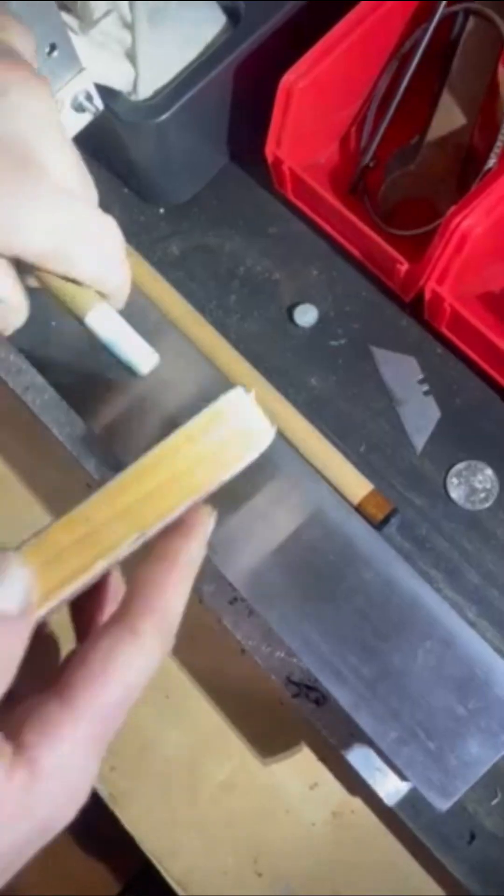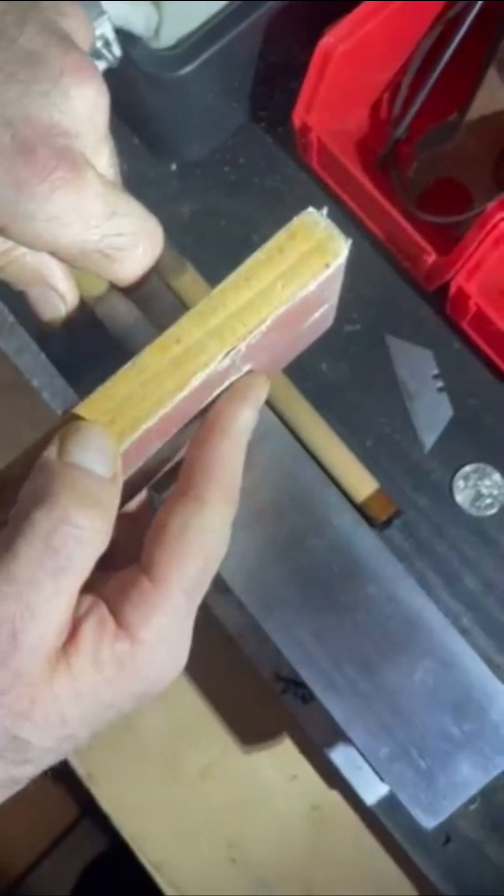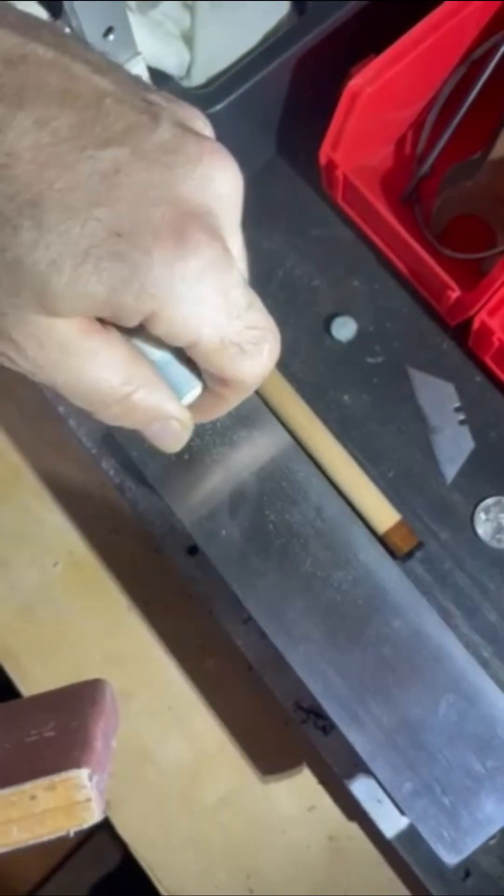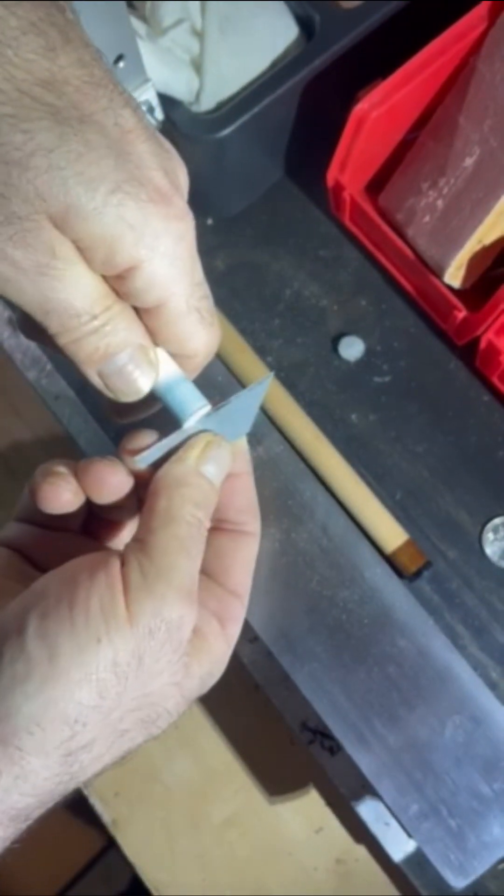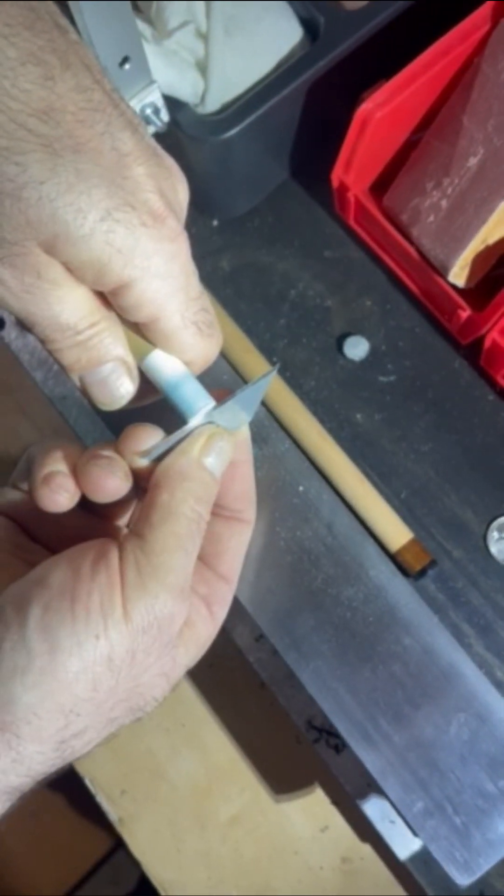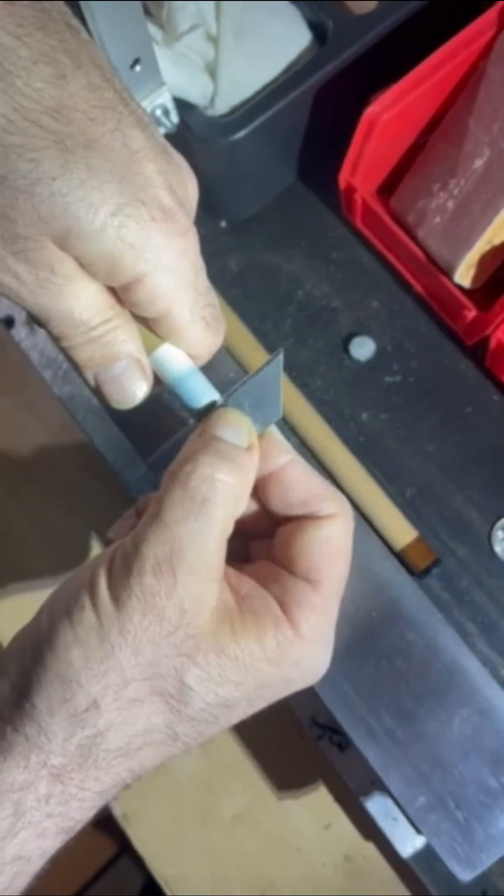Jason will continue to work on that surface. There's a lot of glue residue left. Right now, Jason is removing the glue and squaring up the end. This end of this ferrule was mushroomed a little bit, so that's being serviced as well.